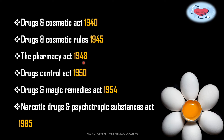Next, the Drugs Control Act. The Drugs Control Act came in the year 1950. It gives power to fix the maximum price of any drug that may be charged by a dealer or producer. So to recap: Drugs and Cosmetic Act 1940, Drugs and Cosmetic Rules 1945, Pharmacy Act 1948, Drugs Control Act 1950.